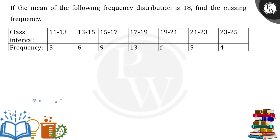They are saying that the mean of the frequency distribution is 18, you have to find the missing frequency. Here f is missing and that is what we need to find out.